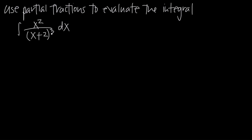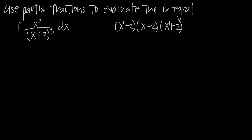If we were to expand the denominator of this fraction, because we have this exponent of 3, we would write it as quantity x plus 2 times quantity x plus 2 times quantity x plus 2 — that exponent of 3 tells us we have 3 factors of x plus 2. Because this is x to the first power, we can call this a linear factor, and therefore we have a repeated linear factor because x plus 2 is a linear factor that's repeated 3 times.